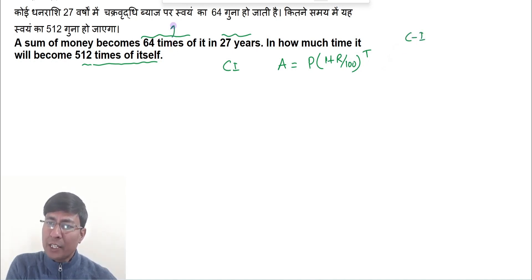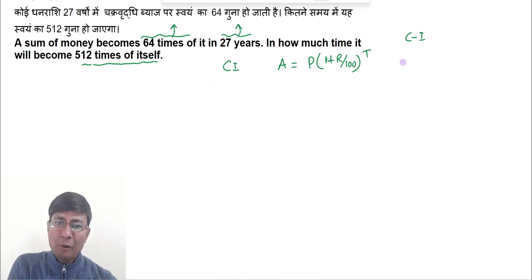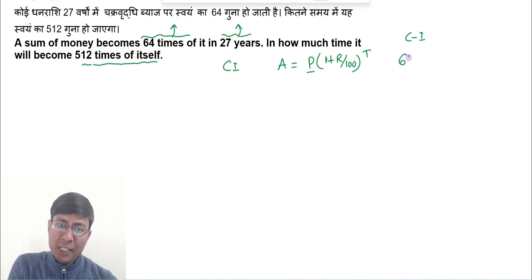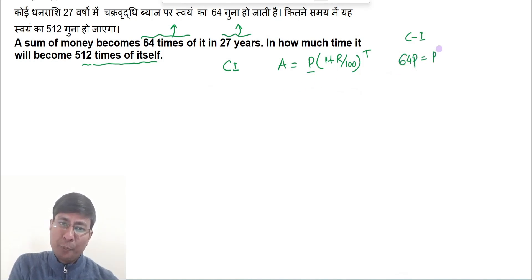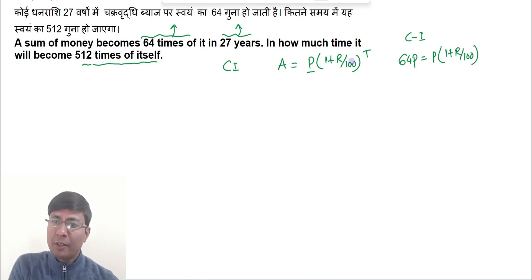In Case 1: the principal becomes 64 times in 27 years. So the amount is 64P, which equals P × (1 + r/100) to the power of time (27 years).